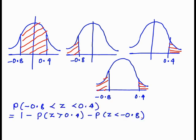So the probability minus 0.8 is less than z is less than 0.4 equals 1 minus the probability of z greater than 0.4 minus the probability of z less than minus 0.8. After substituting the values we get 0.5565 as the required answer.